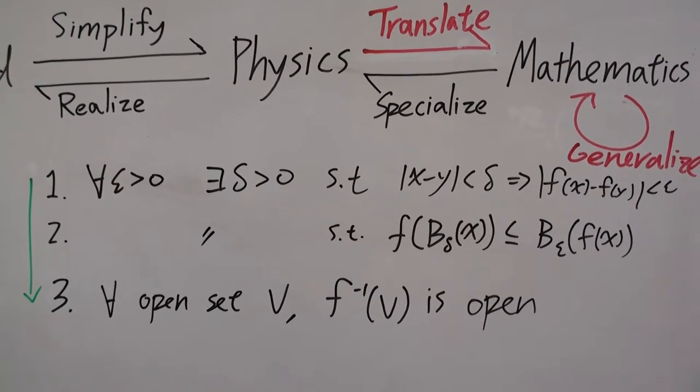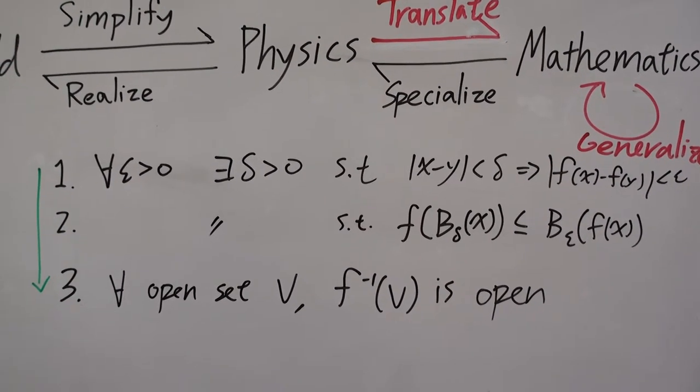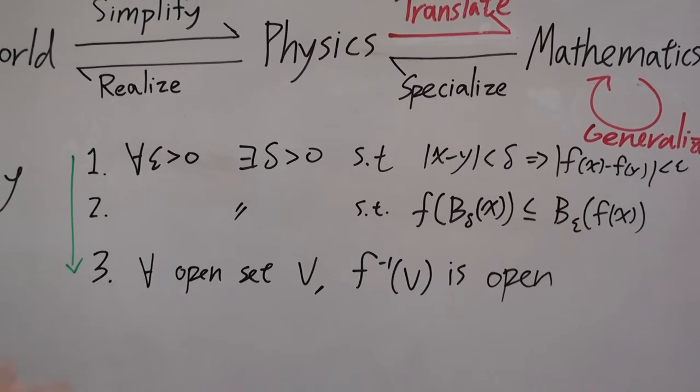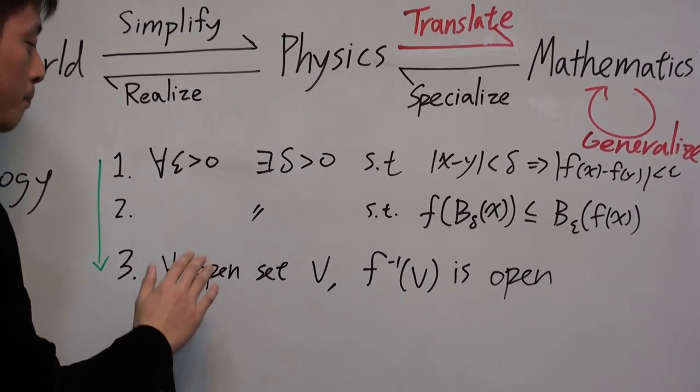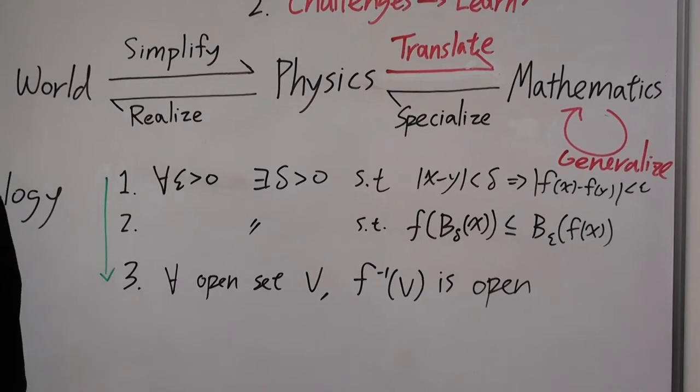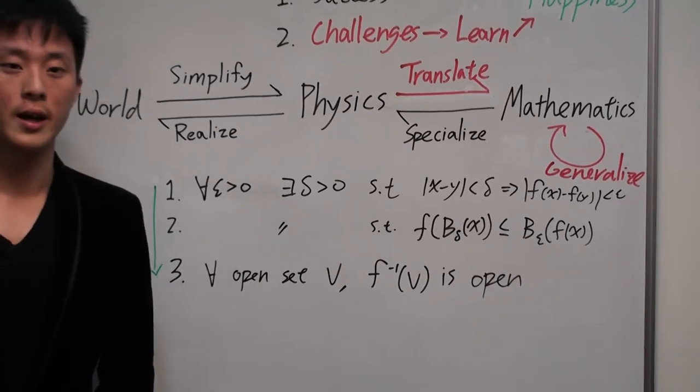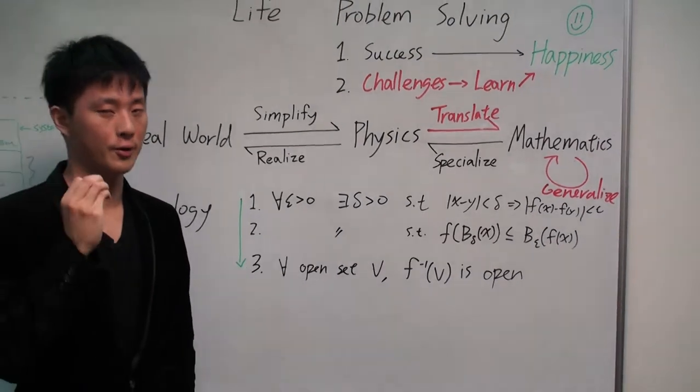We can talk about topological space, just a space with open sets. And then we can define continuity purely based on the openness of set and its pre-image.